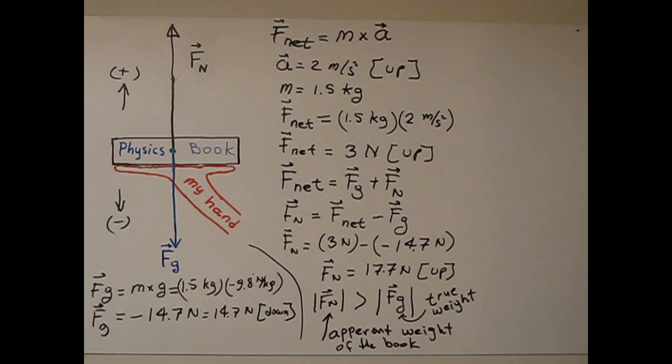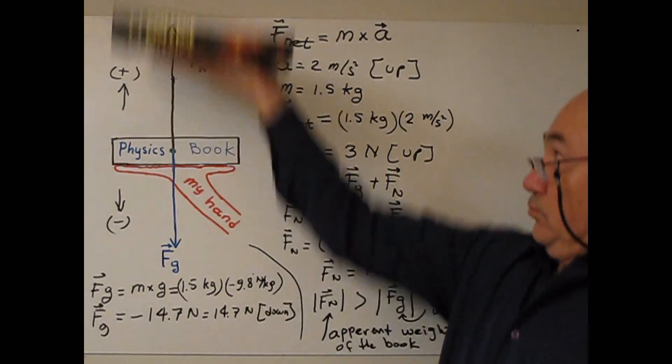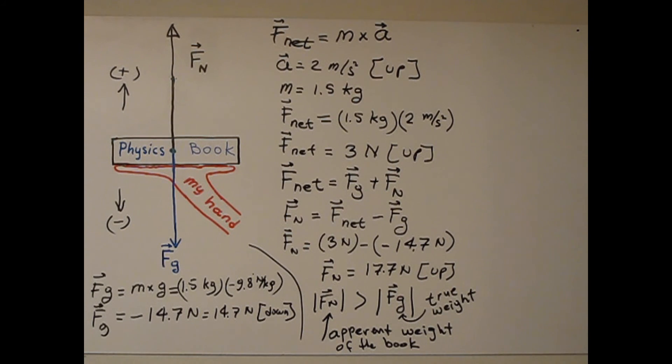Apparent weight of the book changes. If I increase the acceleration, if I apply more acceleration, apparent weight will be less than but still greater than Fg.